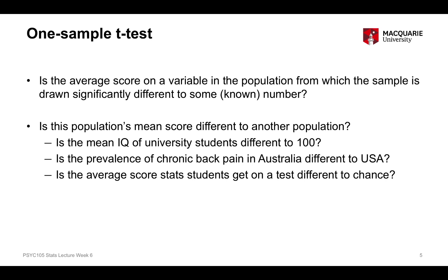Any time we're doing statistical tests, we have two kinds of statistical hypotheses: a null hypothesis and an alternate hypothesis. Remember these are different to a research hypothesis — refer back to last week's lectures if you're unsure about that. For the one-sample t-test, we can express our null hypothesis, represented by H0, as mu equals mu-zero.